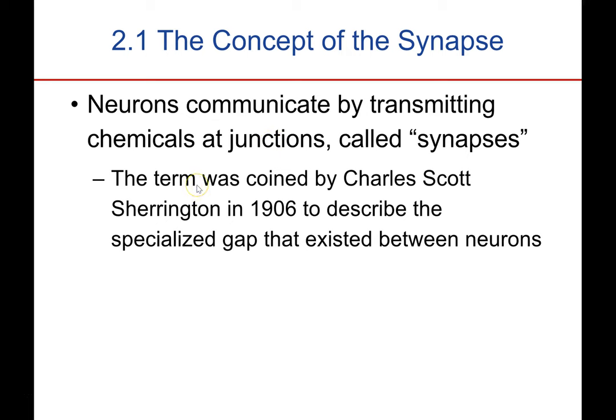The term, and a lot of what we know about synapses, was first proposed by Charles Sherrington, a very important neuroscientist in the early part of the 20th century. In 1906, he described these specialized gaps that existed between neurons.